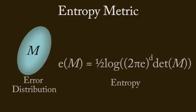We now have an estimate for the distribution of errors between the computed simulation states and those inferred from the data. We summarize this multidimensional error distribution with a single number by computing its entropy. The lower the entropy of the error, the better the simulation matches the data.